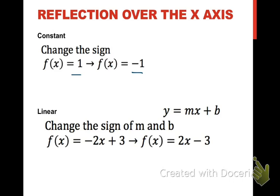For linear, you change the sign of both m and b this time. So if I have -2x + 3, I would change the sign of both the 2 and the 3. So now it becomes 2x - 3. That will reflect across the x-axis.